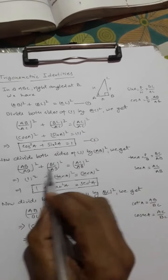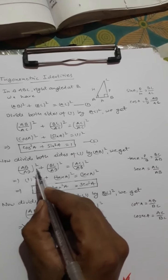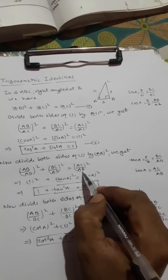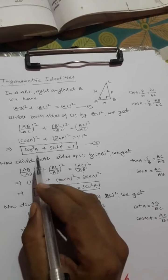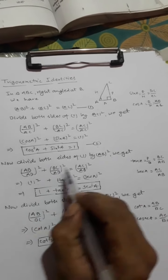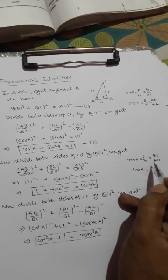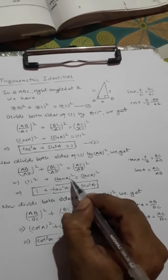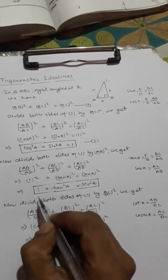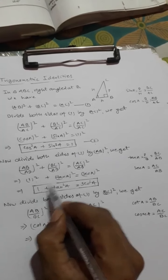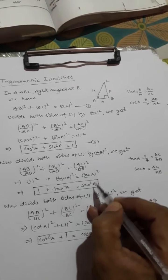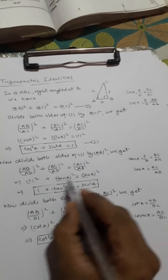Dividing equation one — AB² + BC² = AC² — by AB², we get (AB/AB)² + (BC/AB)² = (AC/AB)². AB/AB cancels to 1. BC upon AB is tan A, and AC upon AB is sec A. So we get 1 + tan²a = sec²a. This is our second identity, proved.